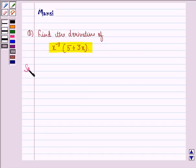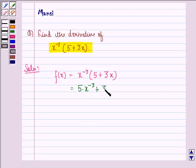So let us start with the solution to this question. Let f(x) = x^(-3)(5 + 3x). First of all, we open the brackets and get 5x^(-3) + 3x · x^(-3).